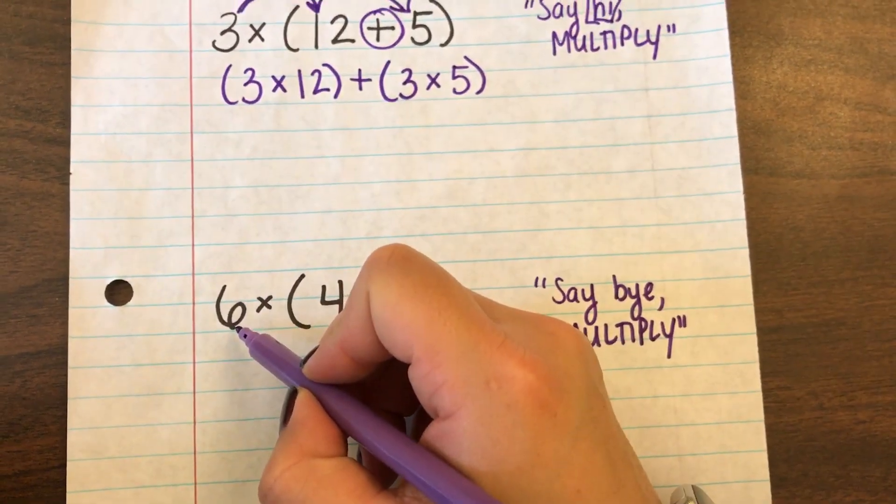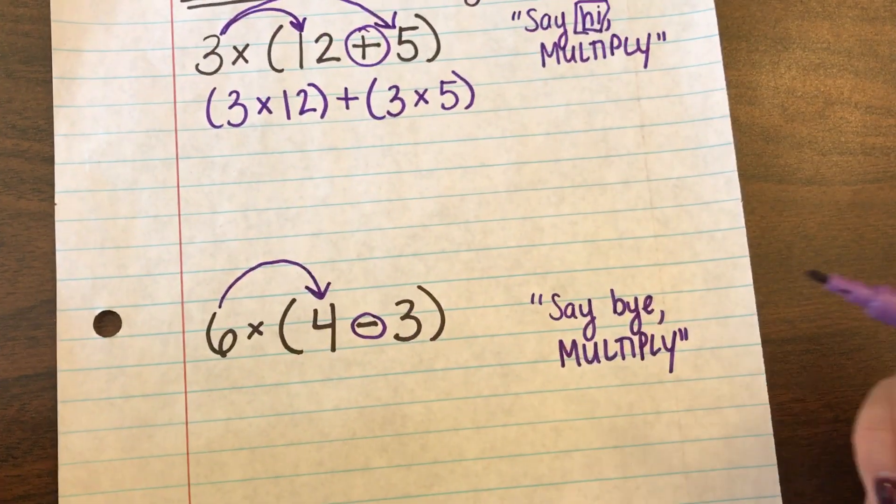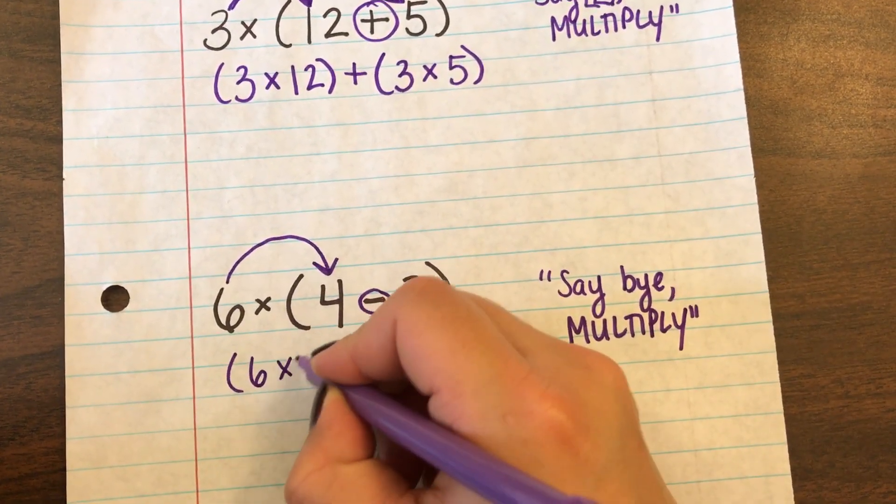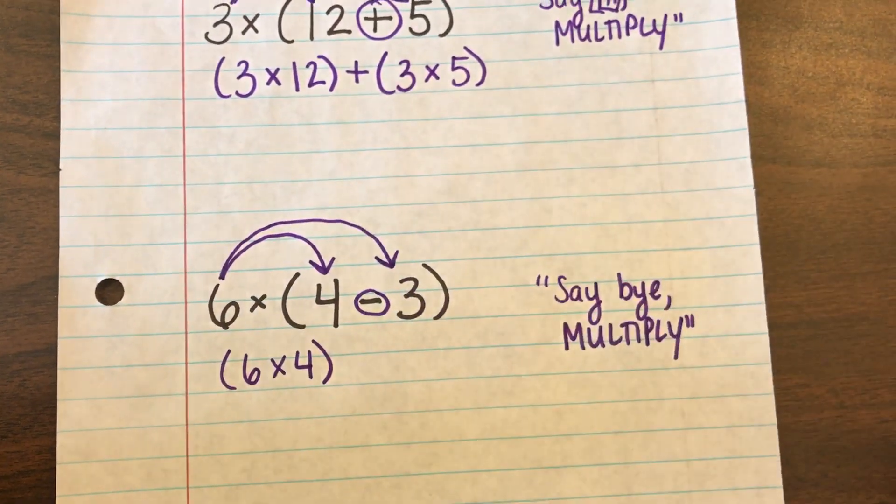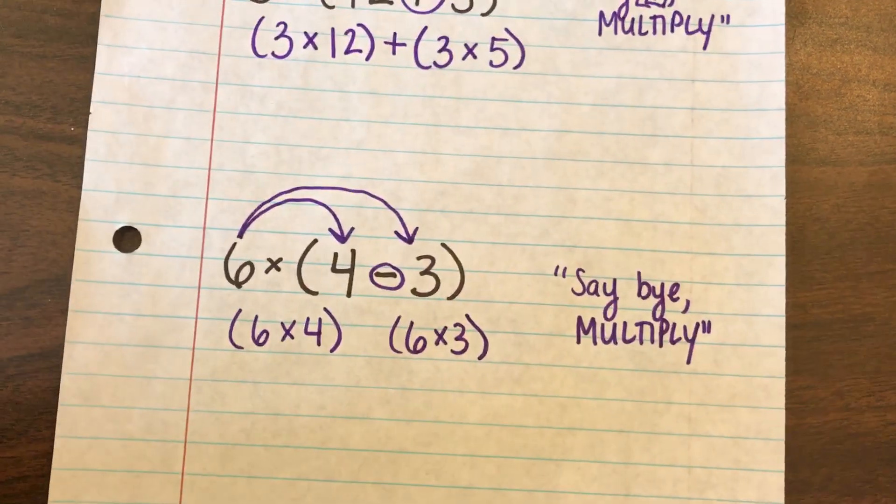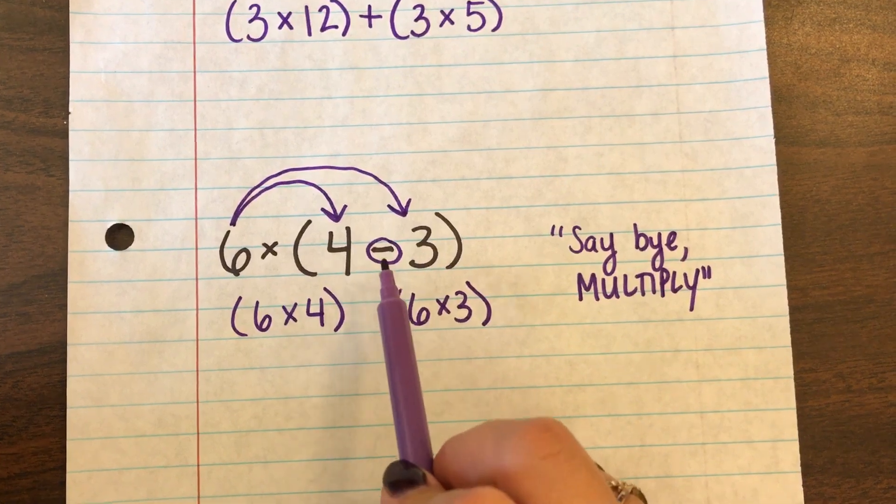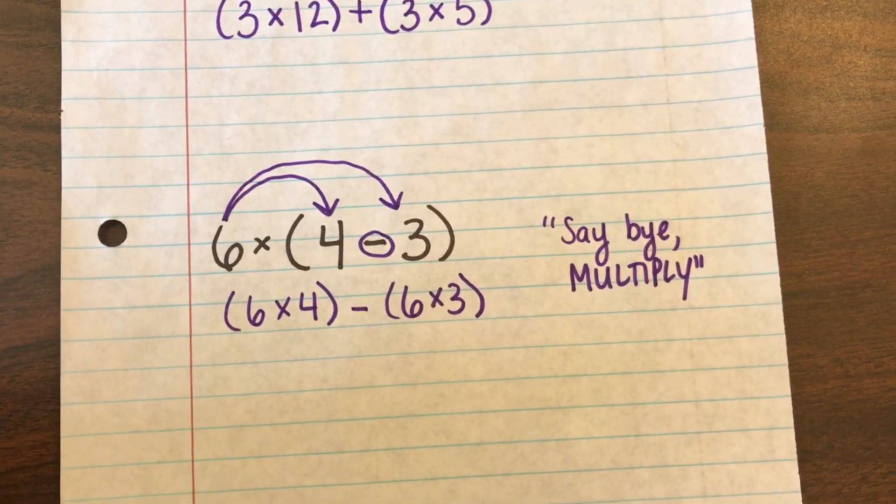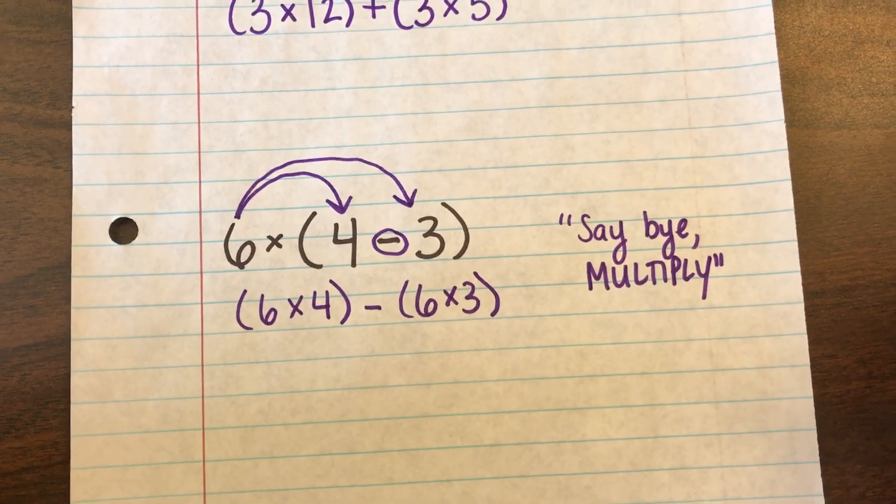So the second problem down here, the 6 is outside the parentheses house. So 6 needs to say bye to the 4. So it's going to be say bye multiply 6 times 4 and it also needs to say bye to the 3. So it's going to also be 6 times 3, say bye multiply. Now since it's a bye or a goodbye that means it's negative because you're leaving. So we know that the minus sign needs to go in between the two new multiplication problems.